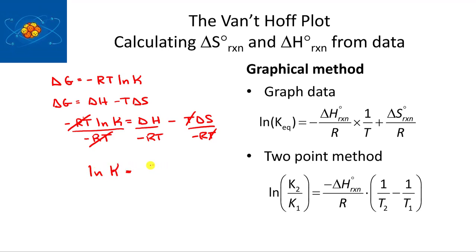ln(K) is equal to negative delta H over R times 1 over T plus delta S over R, like that. So this is y equals mx plus b form. This is my y, this is my x, this is my b, and this is my m. So your slope, when you graph the data as natural log of the equilibrium constant versus 1 over absolute temperature, your slope will be negative delta H over R, and your intercept will be delta S over R.